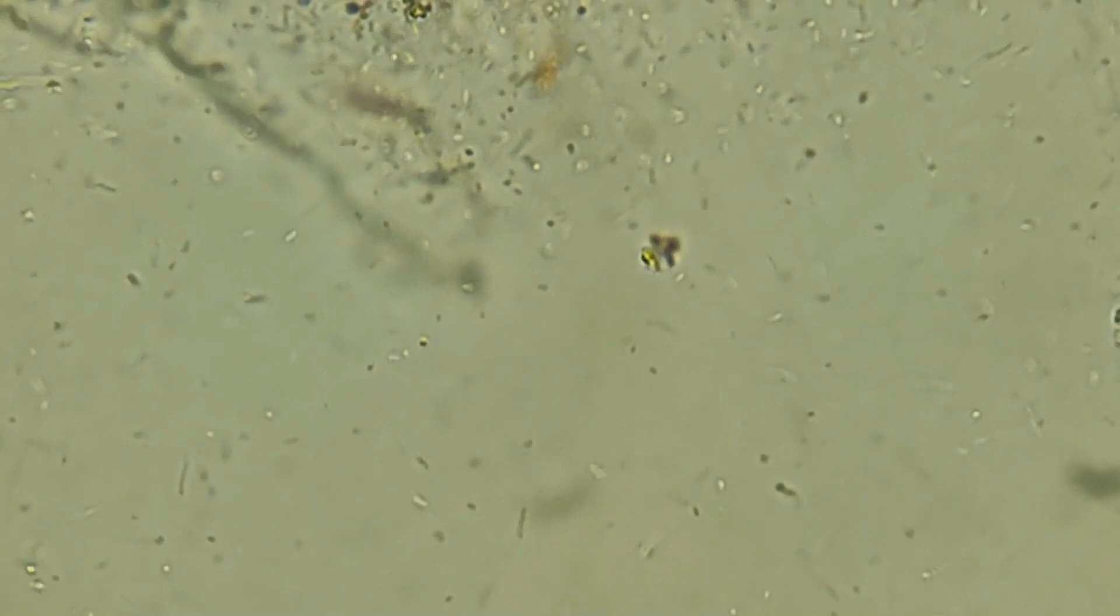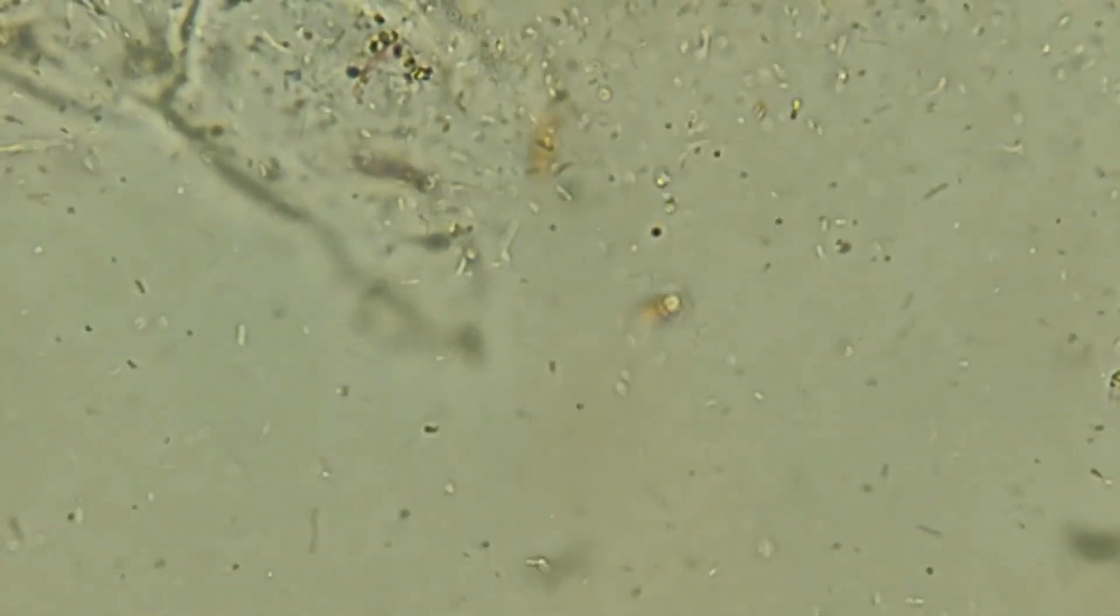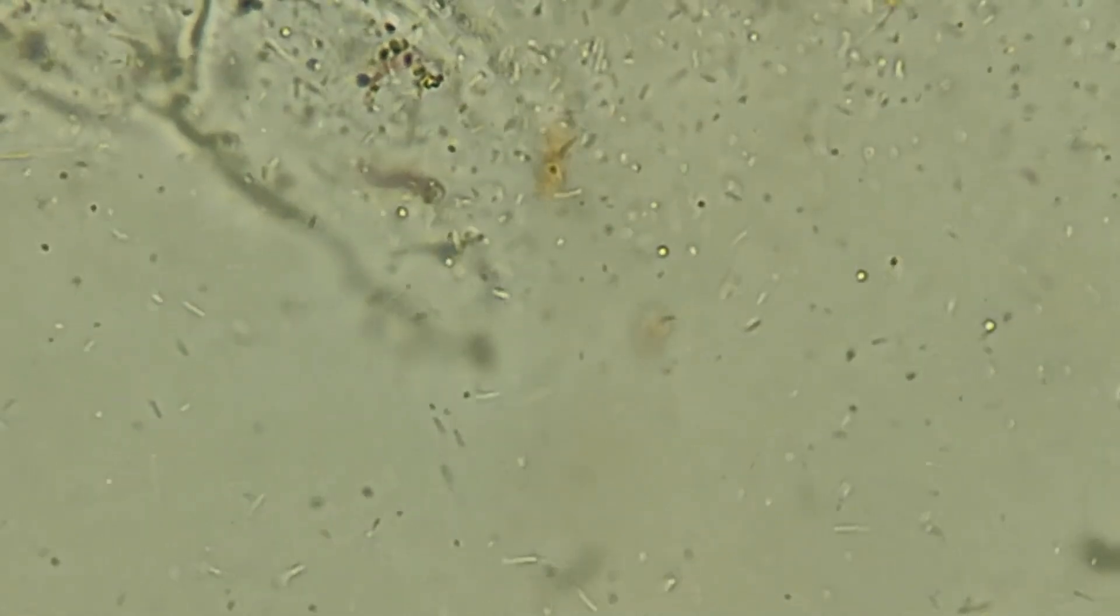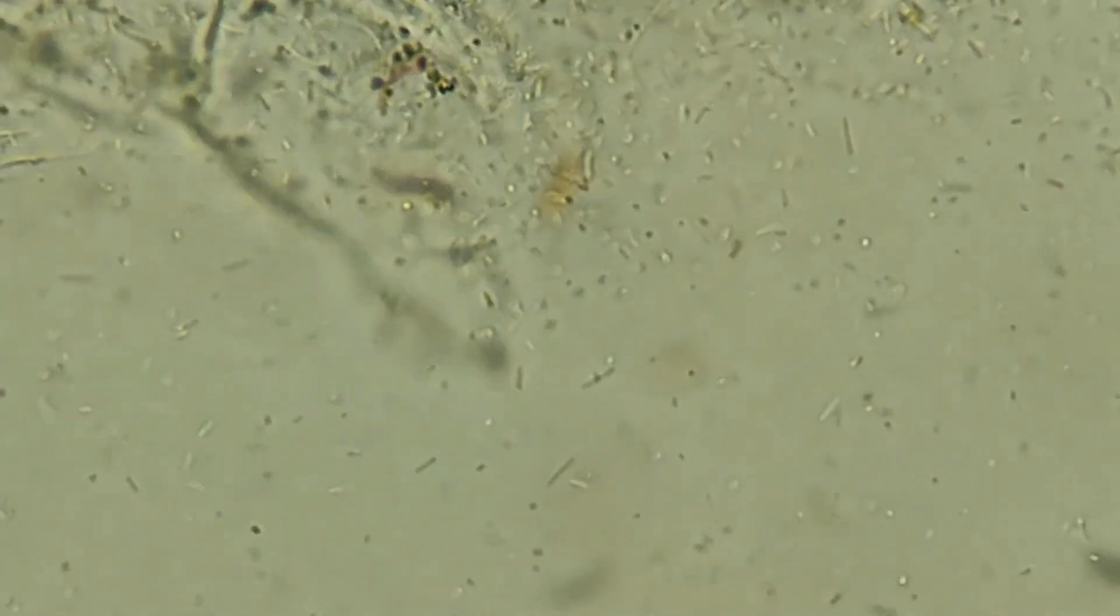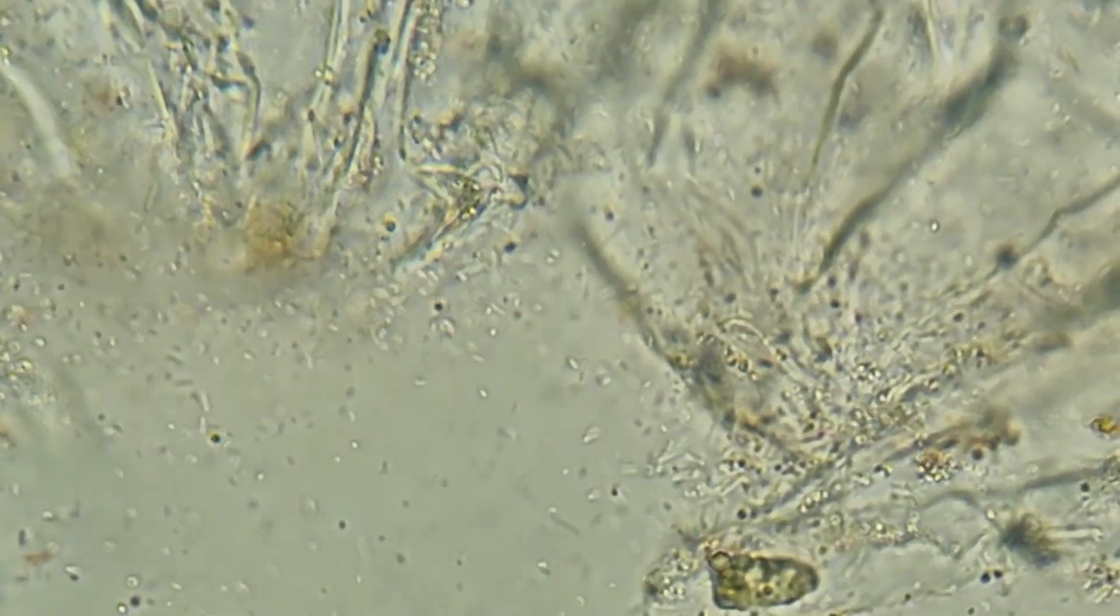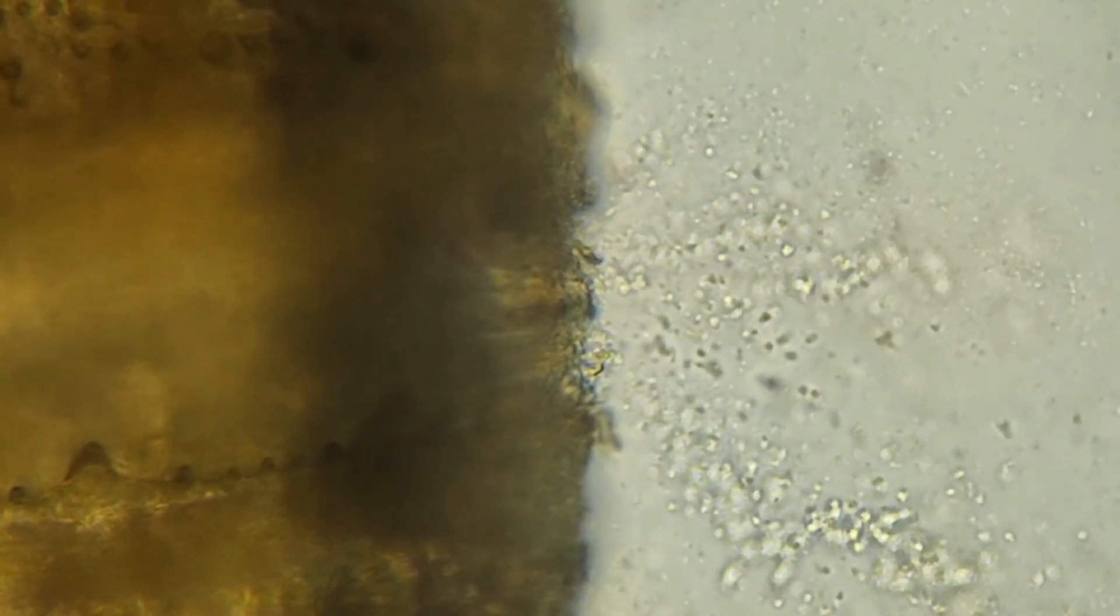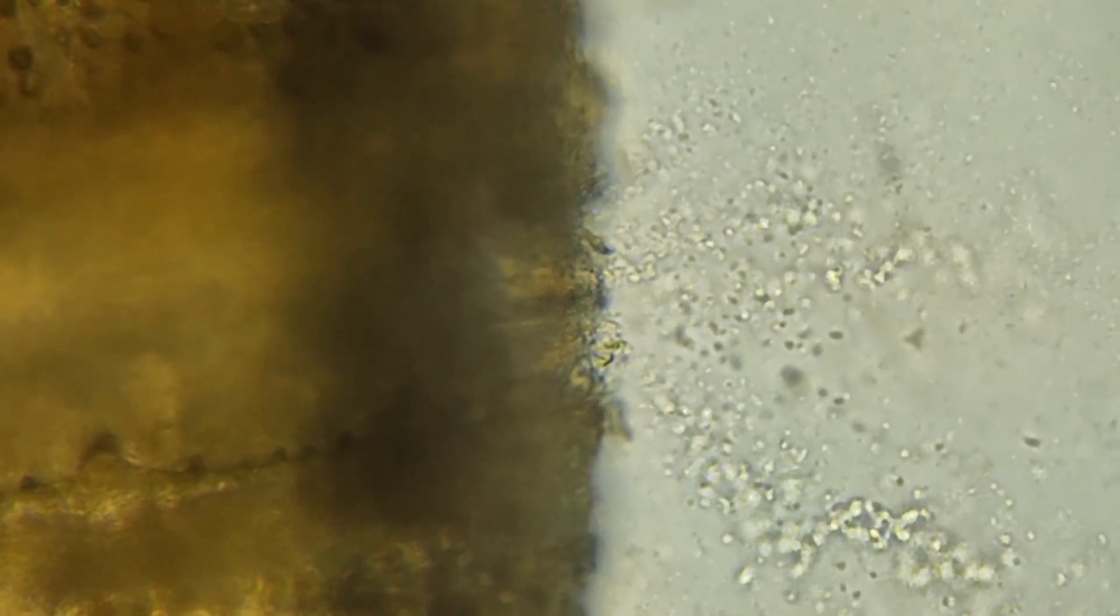Here, I have used tipor-infected banana pseudostem and soft rot-infected carrot to demonstrate the ooze test. We can also see the bacterial exudate from soft rot-infected carrot under microscope. The magnification is 40X. And BLV-infected leaf sample is also used for ooze test under microscopic observation.